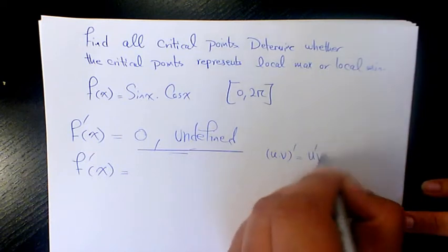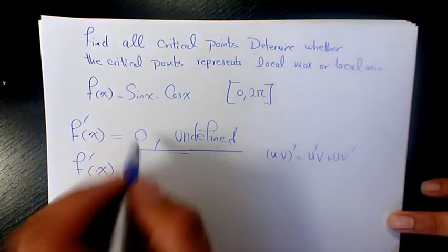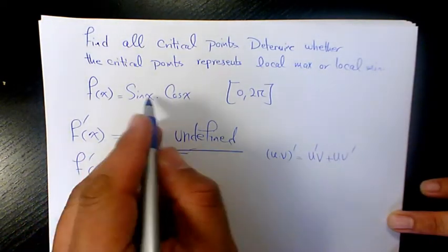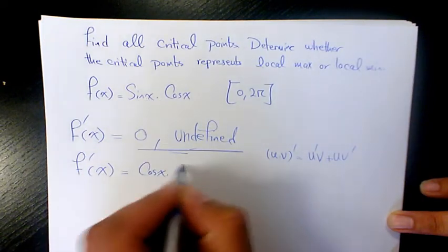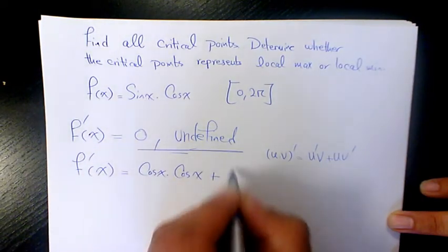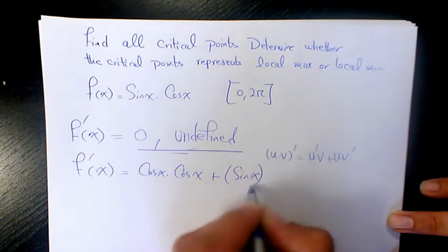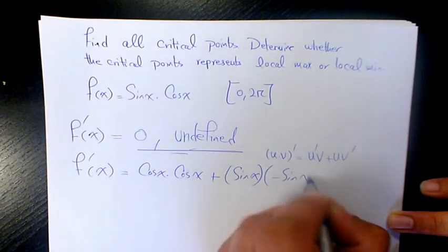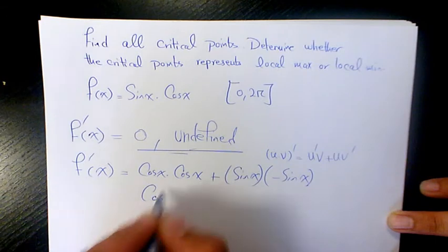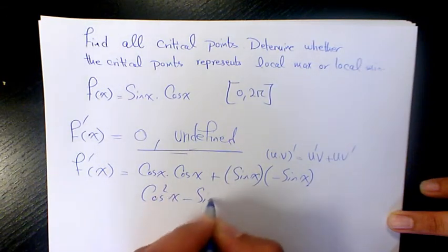The derivative of sine is cosine, so we get cos(x) times cos(x) plus sin(x) times negative sin(x). This simplifies to f'(x) = cos²(x) - sin²(x).